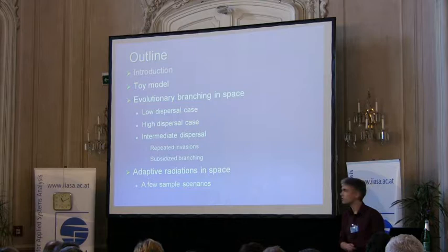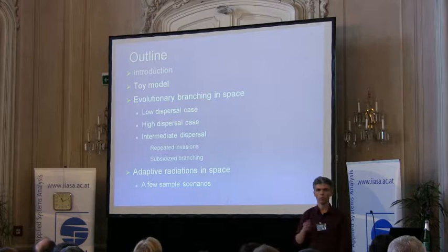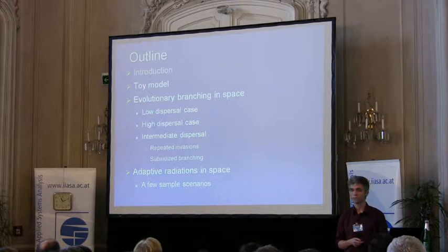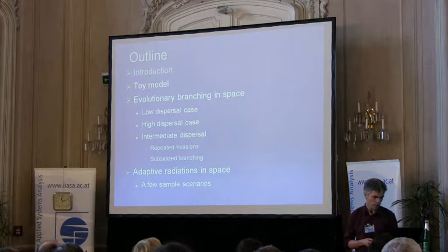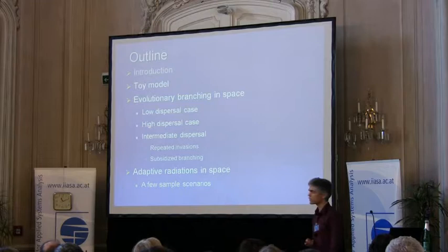Here's an outline. I will start with an introductory model I will use for some examples, then discuss evolutionary branching in space with different levels of dispersal, which will give rise to different scenarios and different types of ecological interactions. And finally, discuss complete adaptive radiations in space with a few sample scenarios.